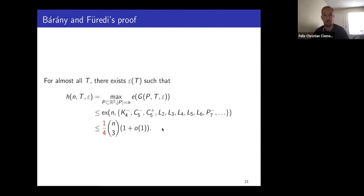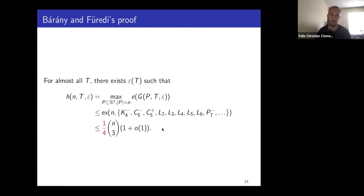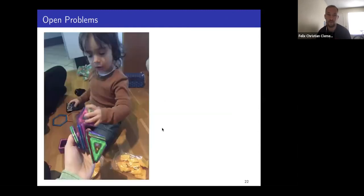The problem is that the method of flag algebras fails for iterated constructions — if the conjectured extremal example is an iterated construction, this method does not always work. To get our improvement we extended the list of forbidden hypergraphs and proved an exact Turán result giving us the one quarter. The key trick was that we used flag algebras not directly, but to prove a stability result, and then applied standard cleaning techniques to obtain the one quarter. Even though the proof looks like just three lines, every line involves a great deal of work.